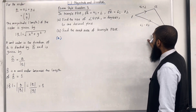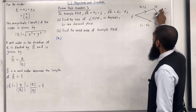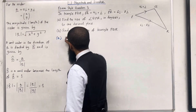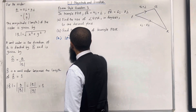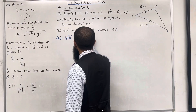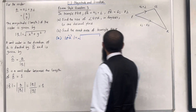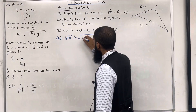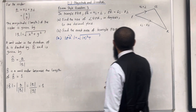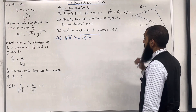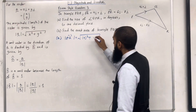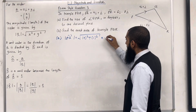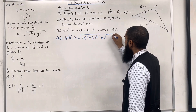Let's work out the length of PQ. The magnitude of PQ is given by √(4² + 1²). Putting this into the calculator gives √17.